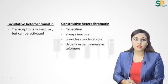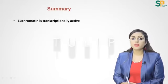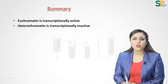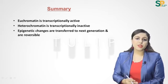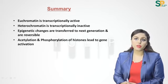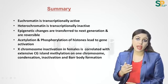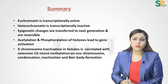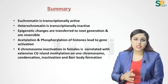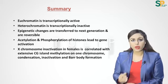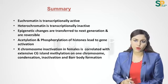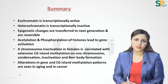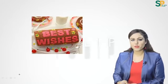Constitutive heterochromatin is always inactive and is found at telomeric or centromeric regions, providing structural roles. In summary: euchromatin is transcriptionally active and loose; heterochromatin is tightly packed and inactive. Epigenetic changes are transferred to the next generation and are reversible. Acetylation and phosphorylation of histones lead to gene activation; X chromosome inactivation is correlated with extensive CG island methylation and Barr body formation. Alterations in CG island methylation patterns are also seen in aging and cancer.